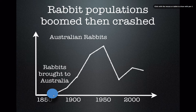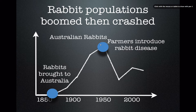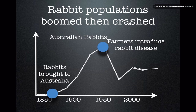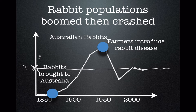So: rabbits brought to Australia, exponential growth. Farmers introduced a disease to try to control them. Populations crashed, and now they're bouncing around. Will rabbits ever reach a stable carrying capacity in Australia? The answer is: I don't know. But you need to understand what these concepts mean.